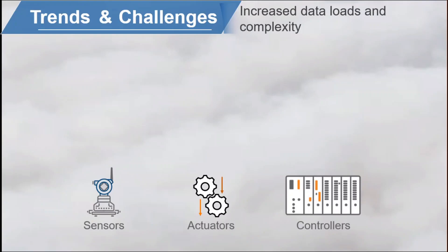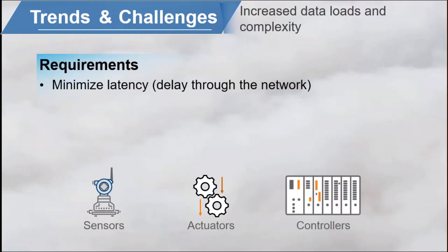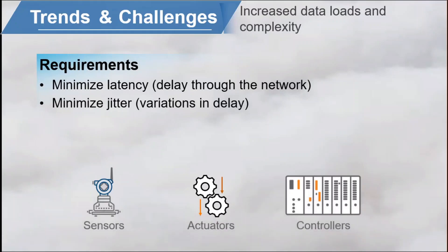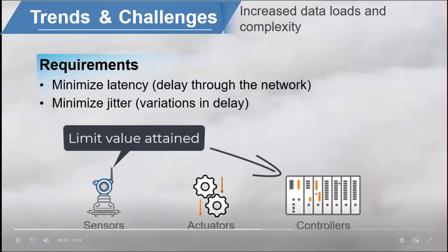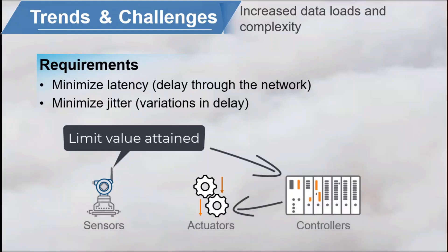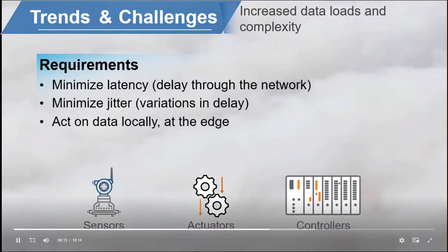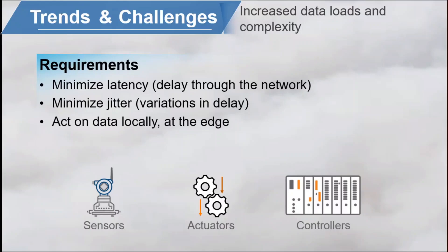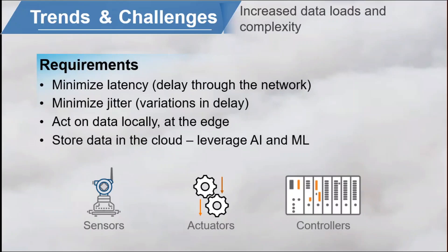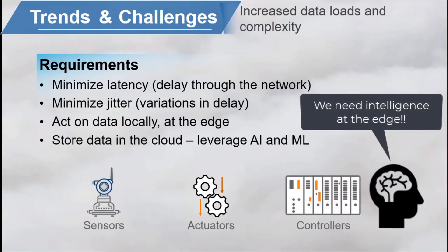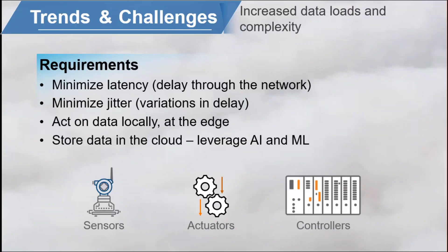These IoT devices and certain high-performance user applications must minimize latency or delay through the network, and sometimes jitter — variations or inconsistencies in delay. Perhaps a sensor detects that some heat limit has been reached, it sends this information to some controller, a decision is made, and then signaling is sent to some actuator to turn off the gas burner. We can't wait for these signals to pass up through the cloud and back — we need a decision now. We still need cloud-based systems for their centralized management and data pooling capabilities, and we probably want that IoT data stored long-term in the cloud where AI and ML can analyze all that big data and identify trends. But today's modern campus designs must also consider the need for intelligence at the edge, where users' devices and IoT systems connect. I'm thinking about Aruba's Edge Services Platform, or ESP, which I'll talk about soon.